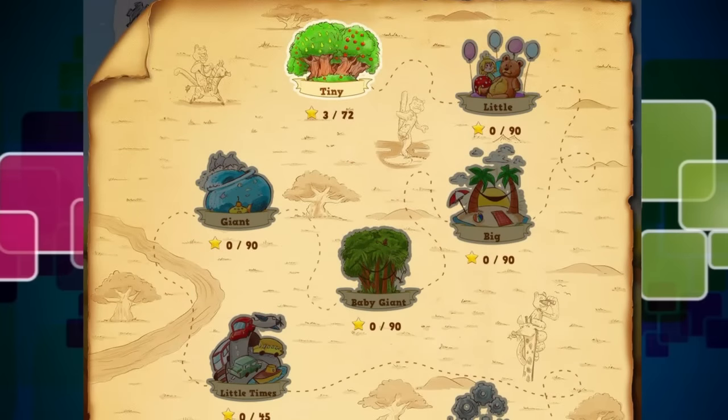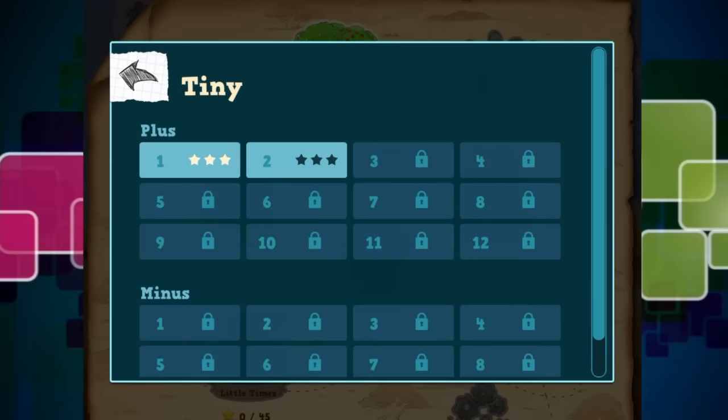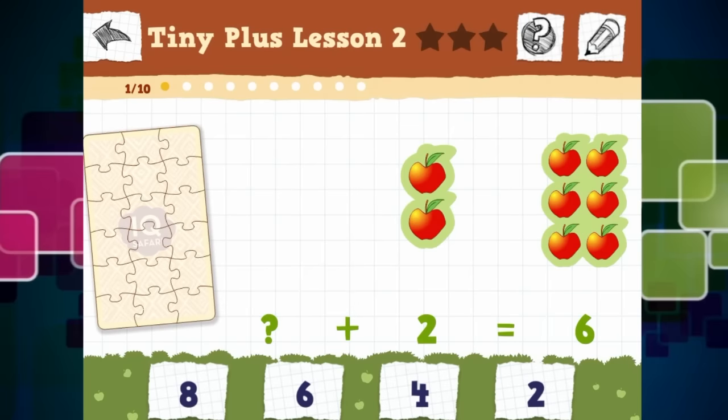So we have come to this map and we will click on tiny and then we have choices. We can either go for plus or minus. So we will go for plus. And as you can see, we are now given sums. So question mark plus two equals six. So that must be four.